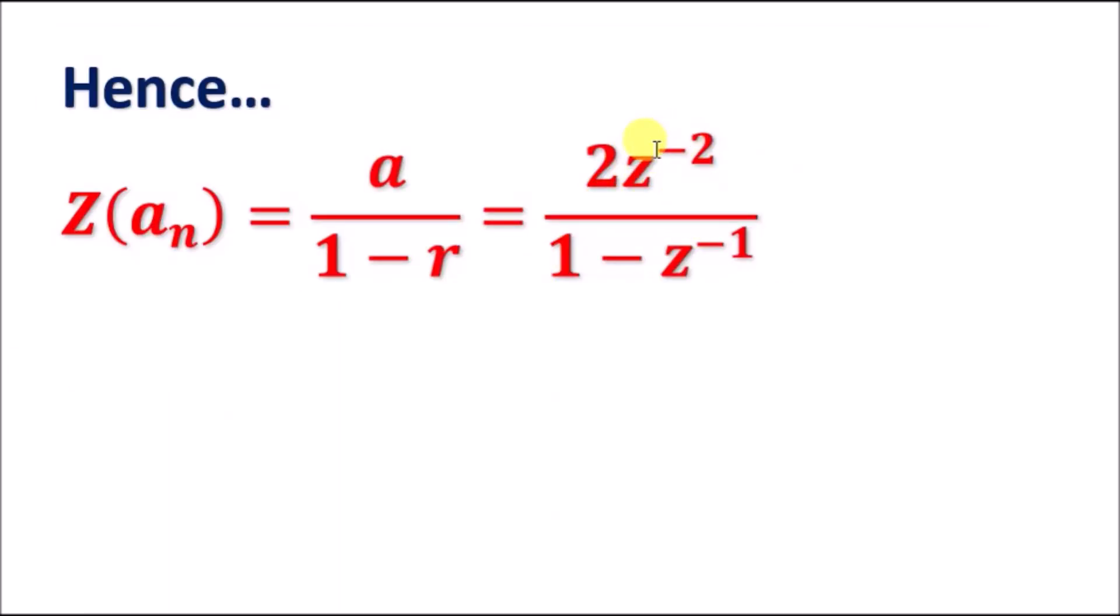By the way, if you don't like this too much, you can pull out this z^(-2), which can be written as 1/z^2. Tidying up, you should get a result like this to see what it actually looks like.